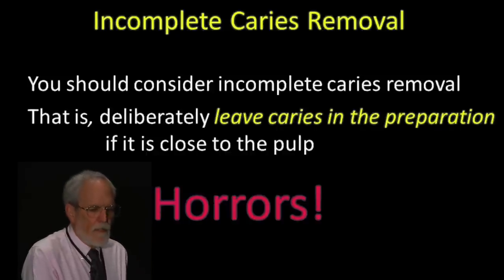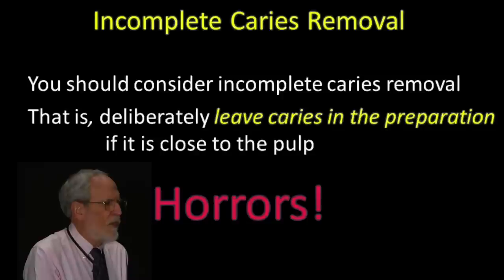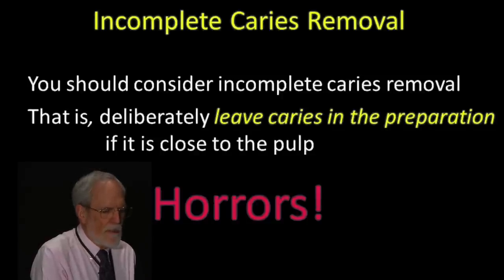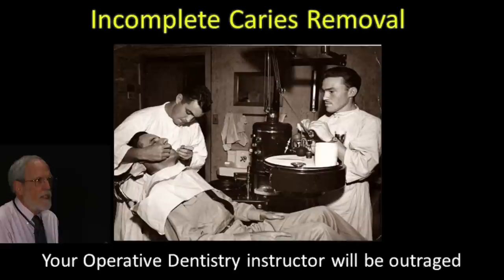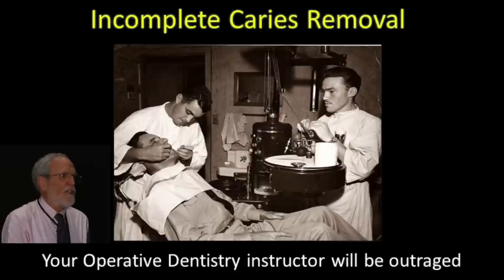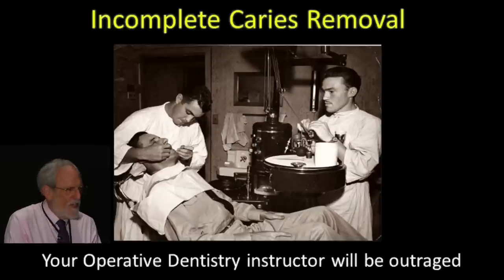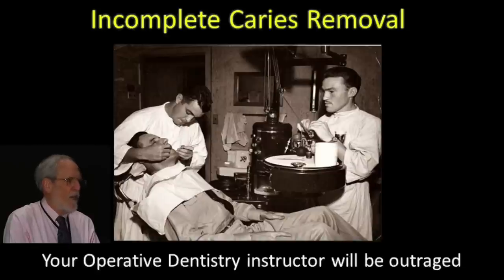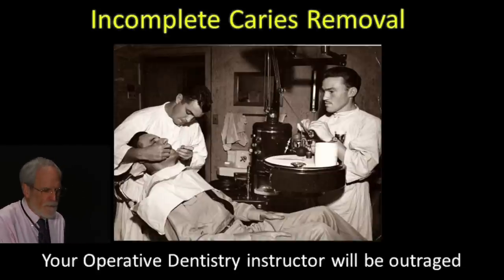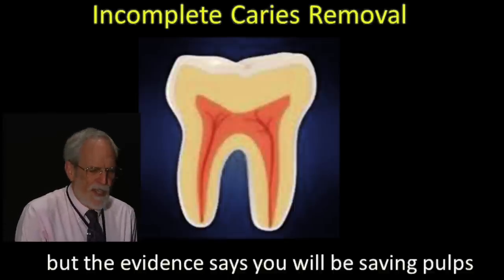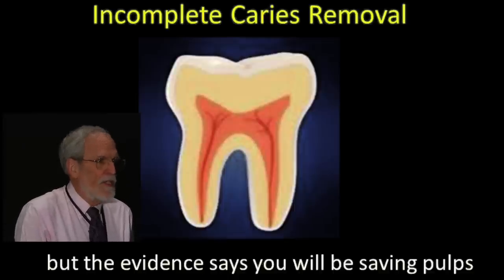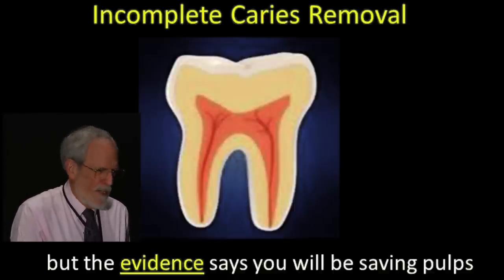That is, deliberately leave caries in the preparation if it's close to the pulp and place a restoration over it. Horrors! My operative dentistry instructor is spinning right now — and there I am, the left-handed dentist, desperately trying to remove the caries, because if I didn't, I would flunk. If this were a state board examination, I'd have to take it over again. But the evidence says — and I repeat, the evidence says — you'll be saving pulps and teeth.